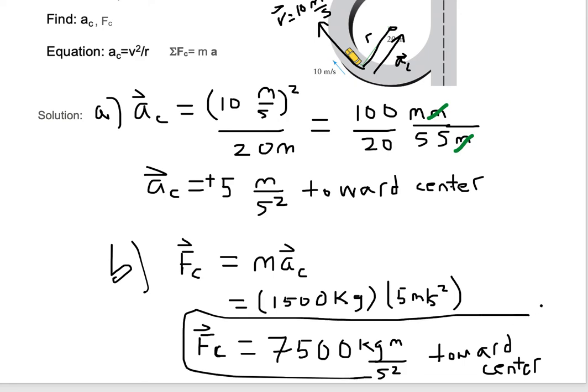So we box our answer. And now you decide. Do you want to leave it as kilogram meter per second squared? That's fine. You can put the positive symbol in there. That's fine. I've already declared to the center.